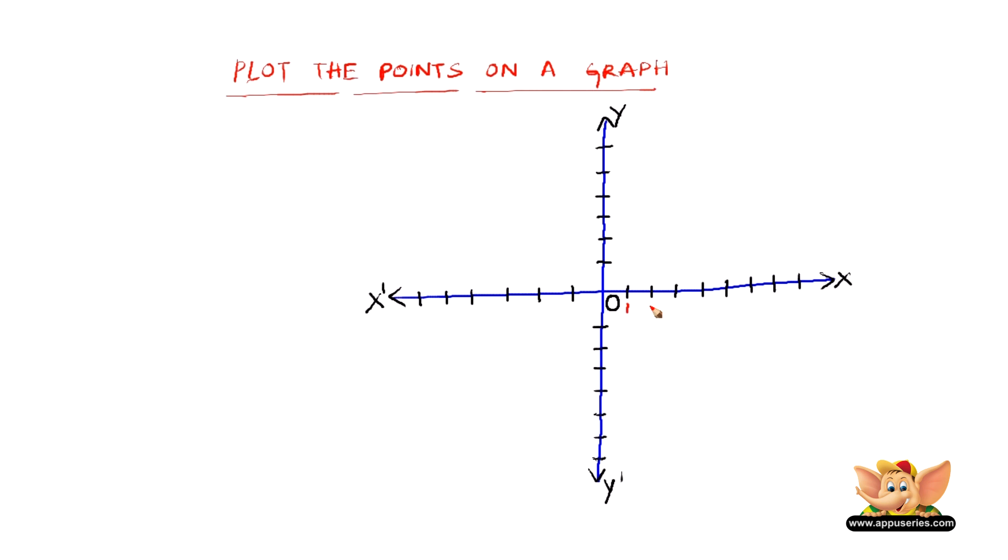Here we know it is plus, so it is 1, 2, 3, 4, 5, 6, 7, 8 and it can go on. And here we know it is negative x axis, therefore it will be minus 1, minus 2, minus 3, minus 4, minus 5, minus 6.